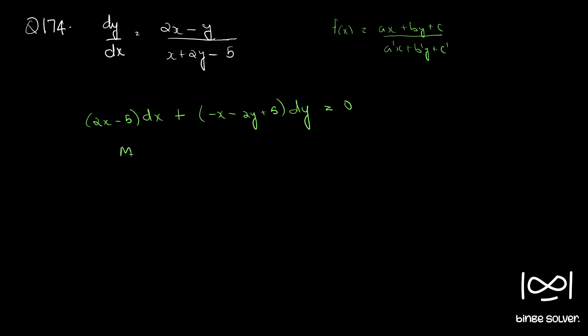Now it is in the form M dx + N dy = 0. To check whether the equation is exact or not, we have to use the necessary and sufficient condition, which is ∂M/∂y = ∂N/∂x.